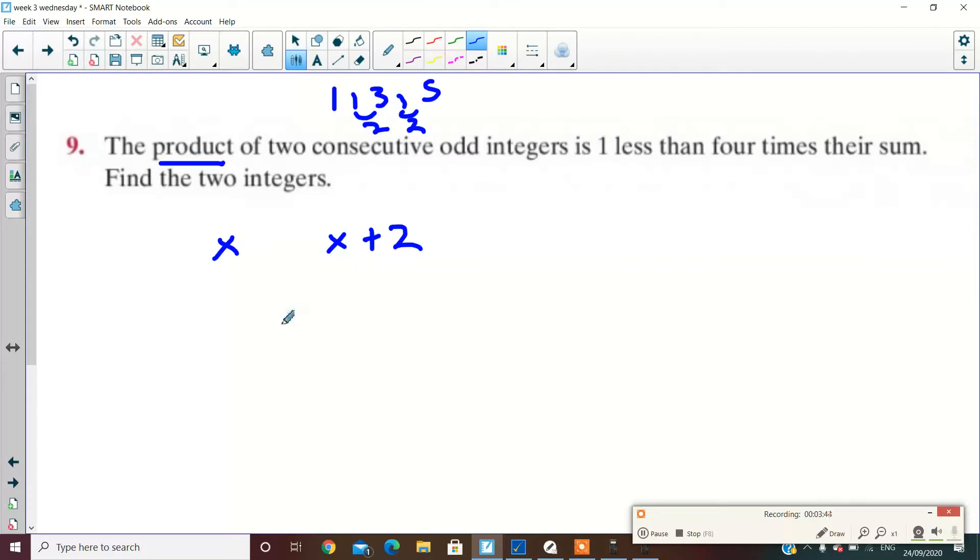The word product means multiply them by each other. So when you see product, you multiply them by each other. And four times their sum. So four times their sum is multiply four by what happens when you add them together. Which side is bigger, the product or four times the sum? Four times the sum is bigger, isn't it? So what I'm going to do is I'm going to add on one over here to balance it out. Another person might have just taken away one on this side, it's the same thing. All I know is that the right side is bigger than the left side, so I'm going to put the plus one over there.